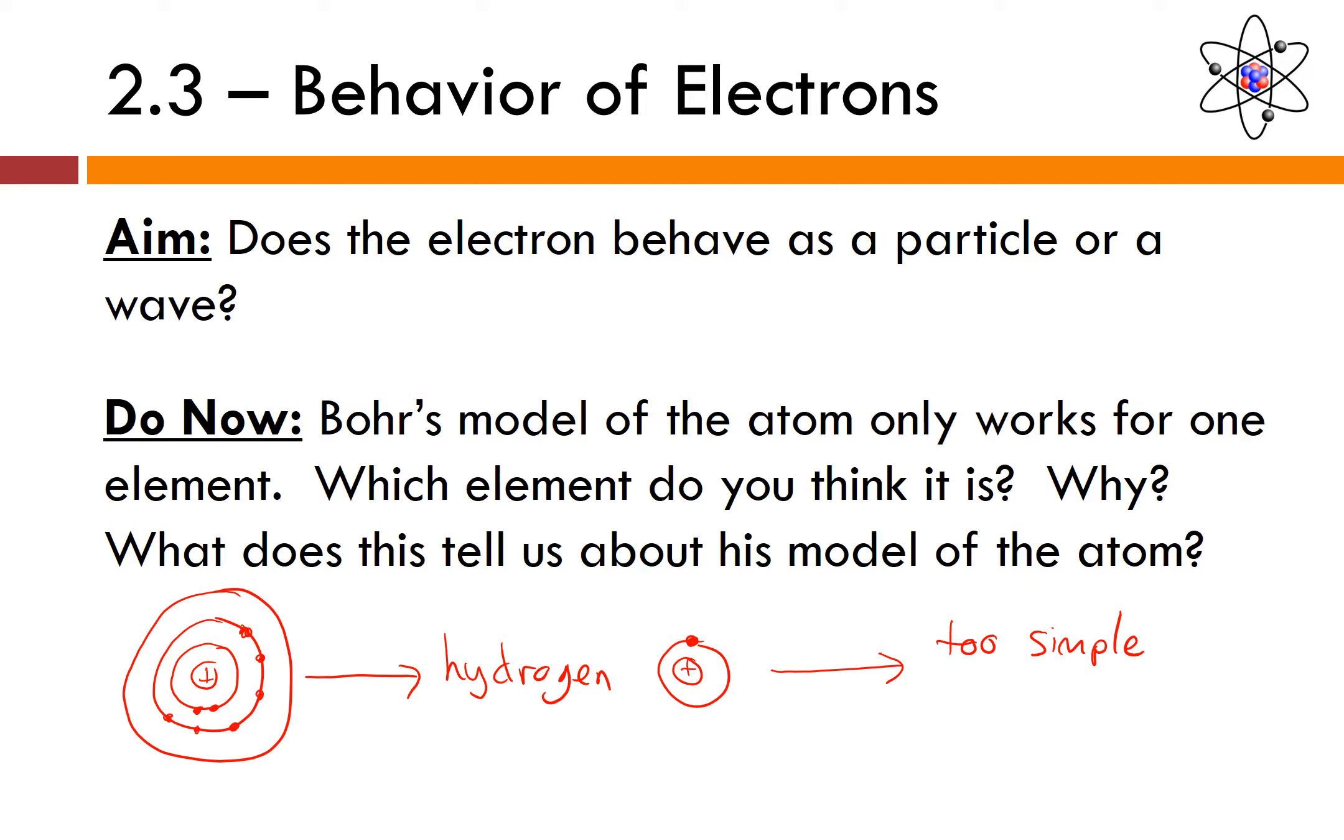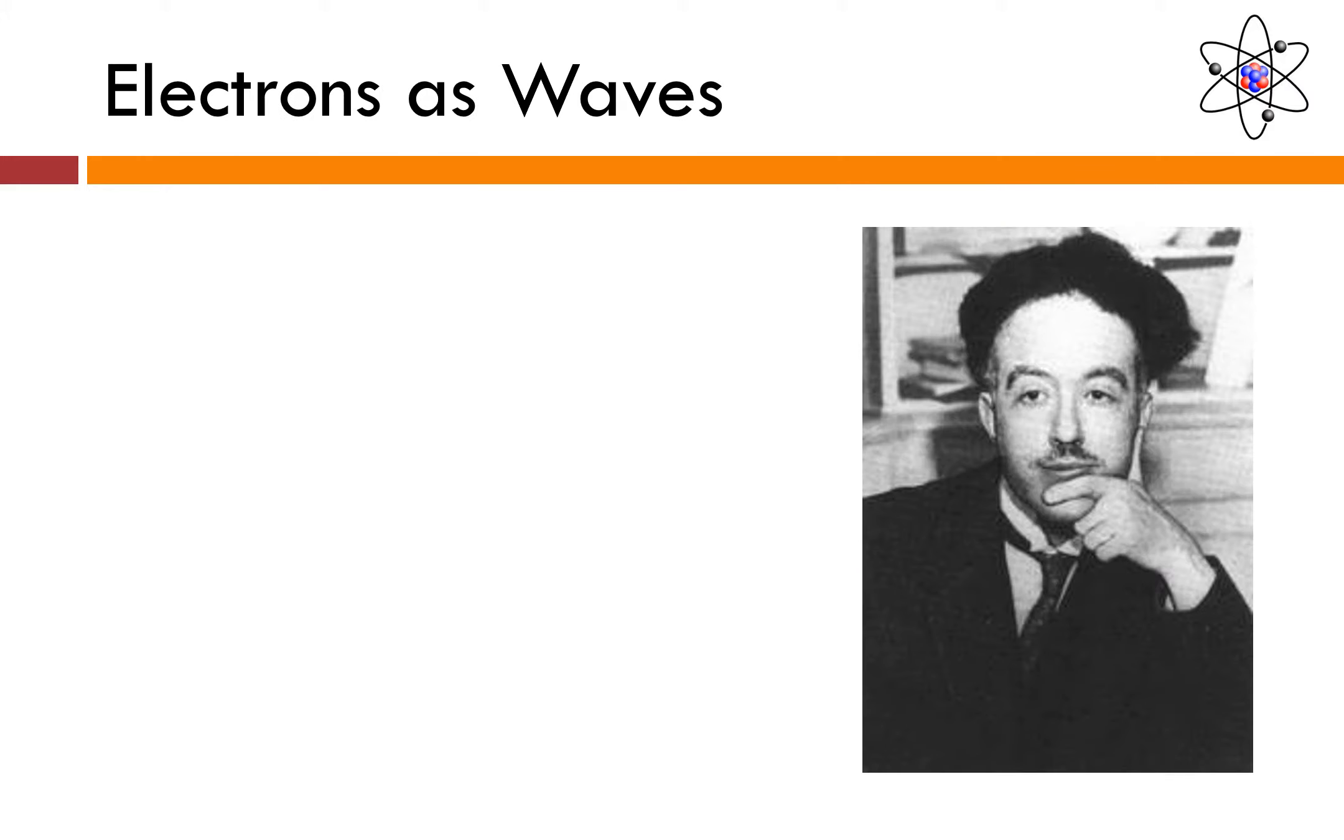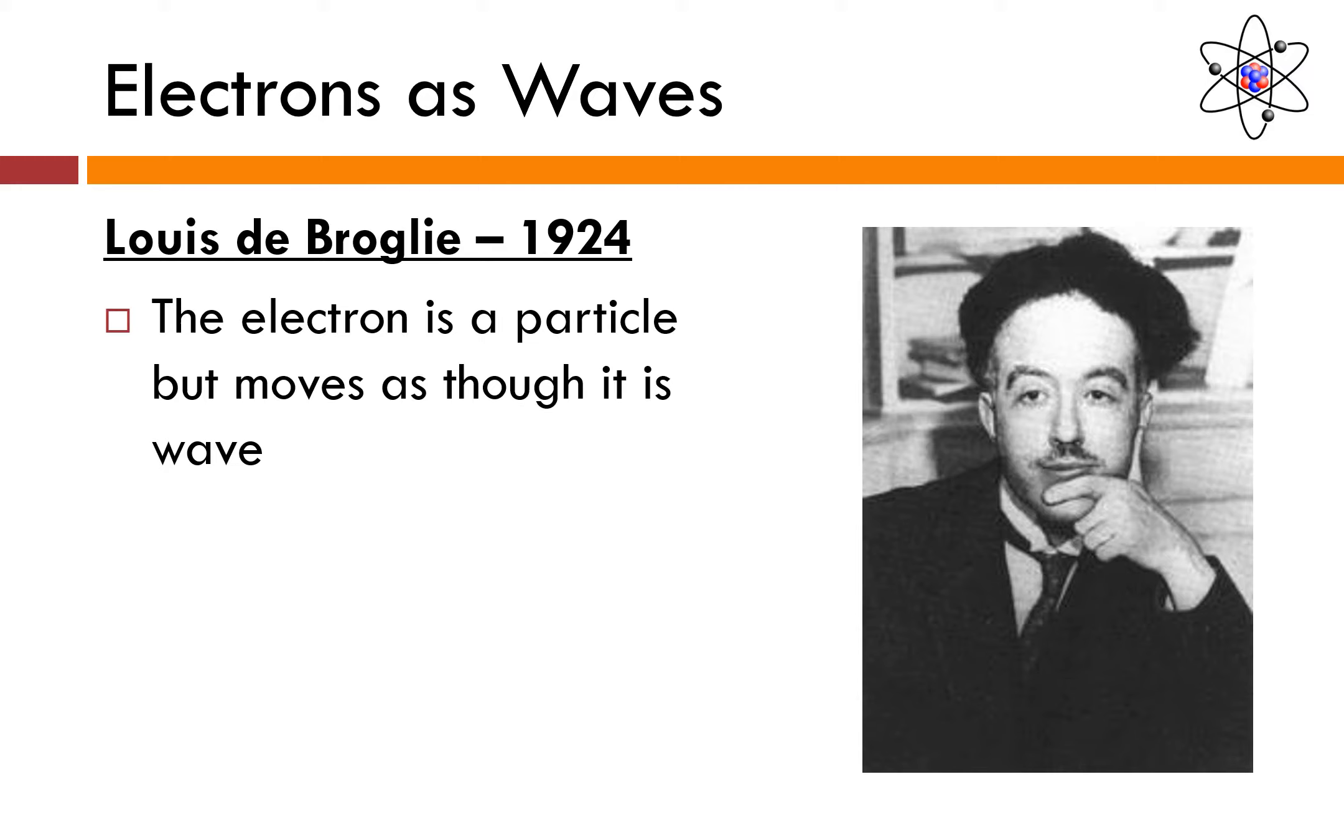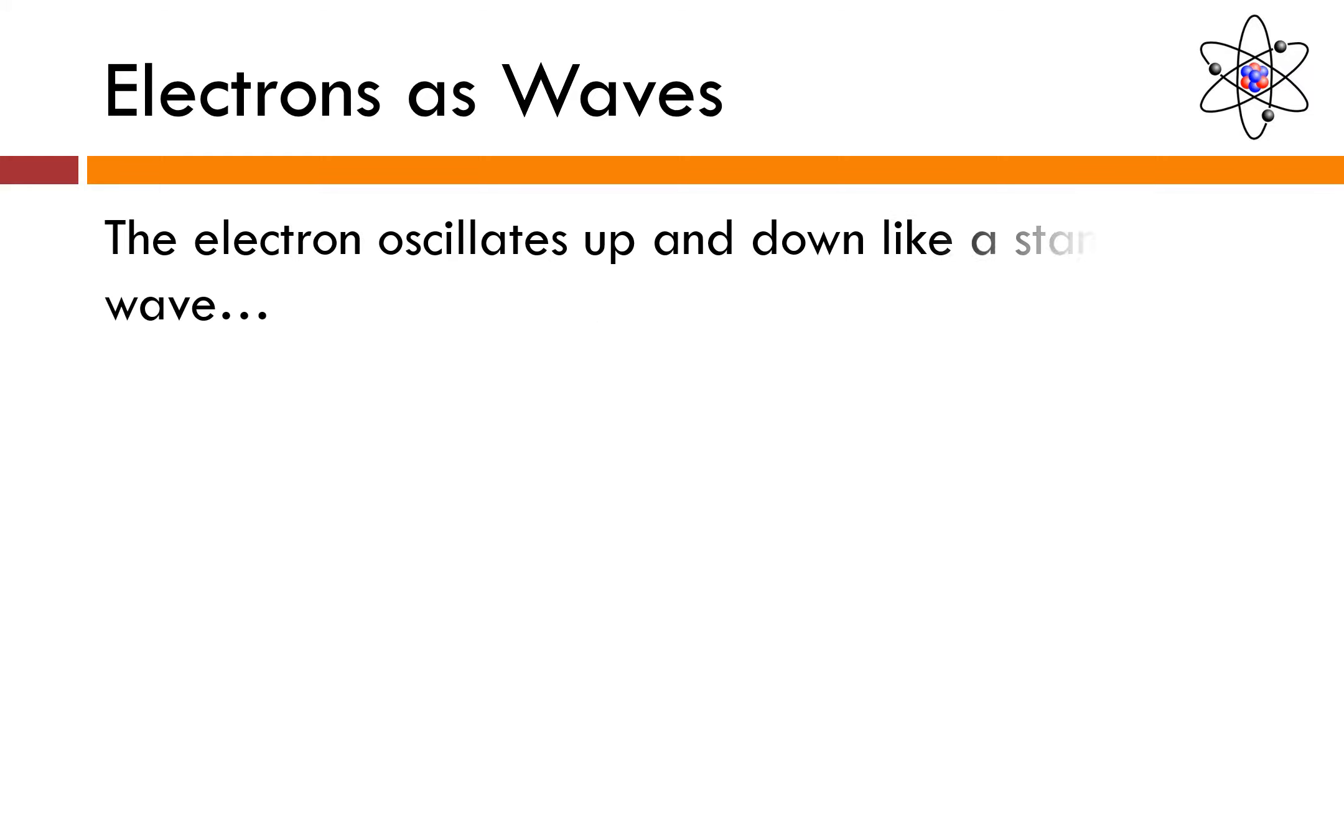Basically this tells us the Bohr model of the atom is too simple. The behavior of the electron is much more complex than Bohr or any other scientists at that point in time had anticipated. Louis de Broglie in 1924 proposed a theory that showed electrons as waves.